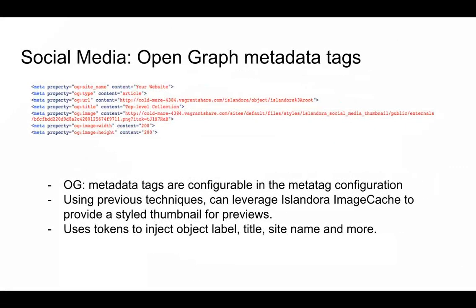It's also worth mentioning that the meta tag module can be used to add open graph metadata tags. These tags are typically used with social media sites or services like Facebook, LinkedIn, Pinterest, and more. I've added the OG image tag with width and height that provides a cached version of an object's thumbnail for use on, say, a Facebook post or when sharing an object on social media. This leverages the Islandora image cast module and we use the page preprocess to add custom tags to the page. Plenty of information could be added as a tag in this manner, and using the techniques outlined in these following pages, we could add any tag we wish outside of the open graph tags.